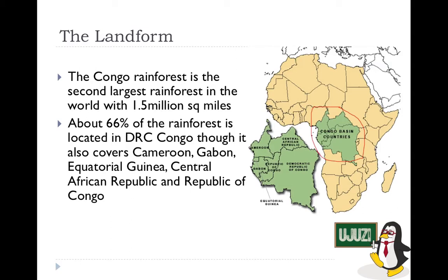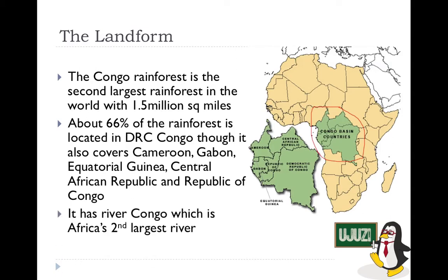The Congo Rainforest has so many species of birds, animals, and other things. A large portion of the people who live in this area depend on the rainforest for food, medication, and many other things. It is called the Congo Rainforest because 66% of it is in the DRC. Inside the rainforest is the Congo River, the second largest river in Africa and one of the largest in the world.